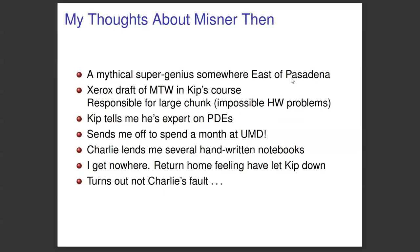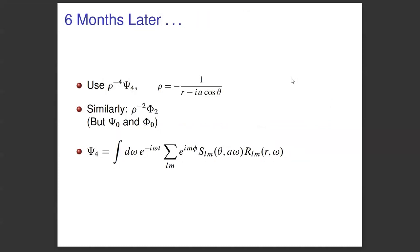And it turns out, it actually was not Charlie's fault that he couldn't help me. I was just a little slow on the uptake. It turned out that if instead of using the equation for psi 4, I just did what you sometimes have to do in freshman calculus, you change variables, you just multiply it by another factor, then you got separation.